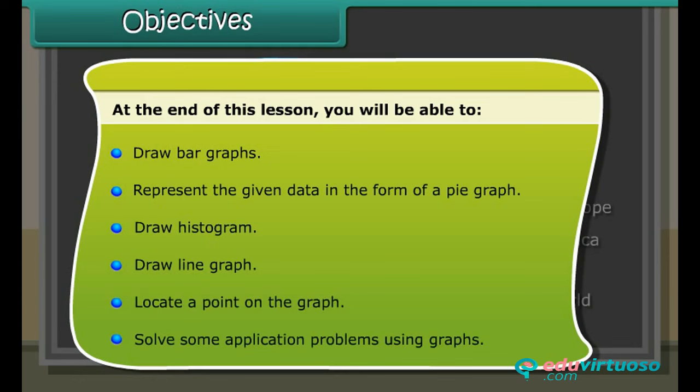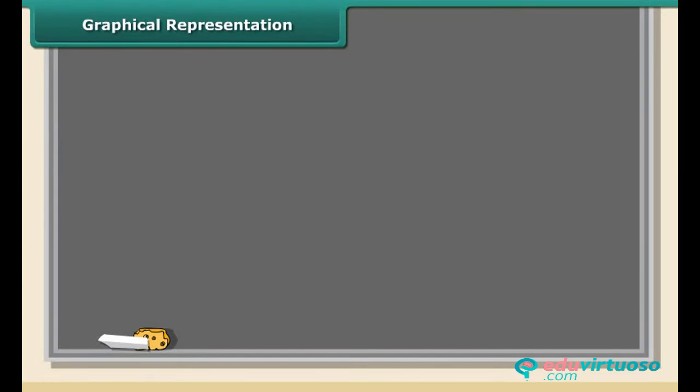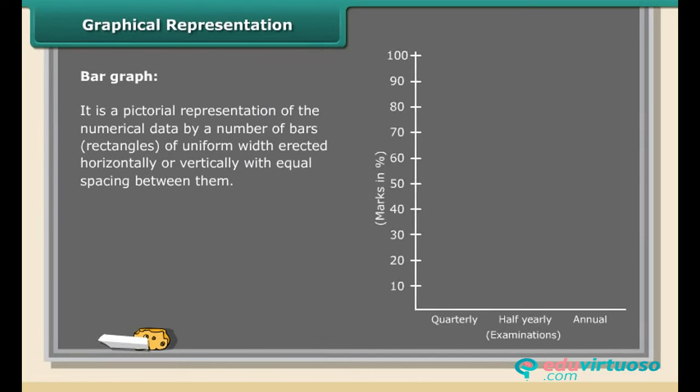Graphical representation. Bar graph: It is a pictorial representation of the numerical data by a number of bars, rectangles of uniform width erected horizontally or vertically with equal spacing between them. The bar graph shows Divya's performance in the quarterly, half-yearly and annual examinations. It helps us to compare whole year's performance.